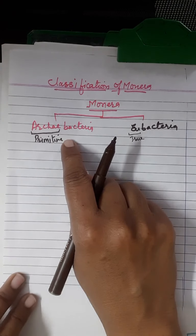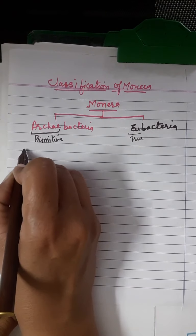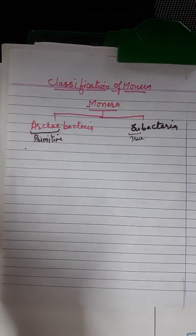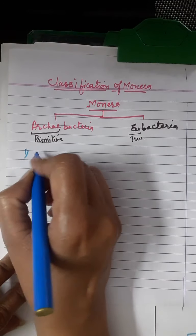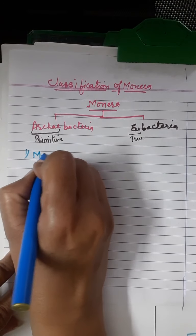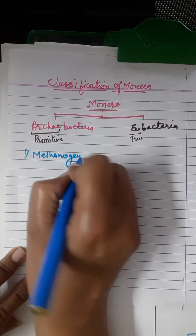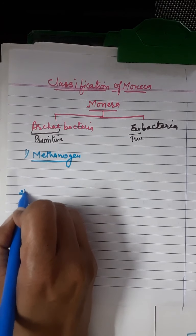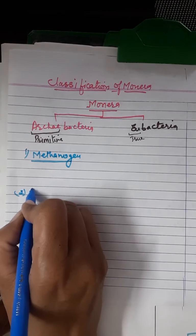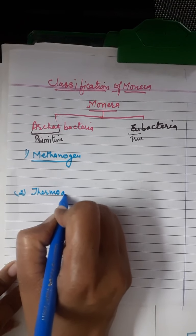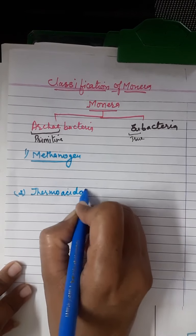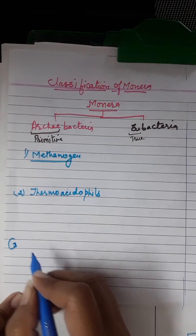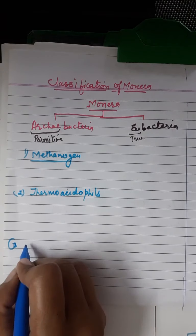First, we look at Archibacteria. Archibacteria are further of three types: the first is Methanogens, the second is Thermoacidophils, and the third is Halophils.